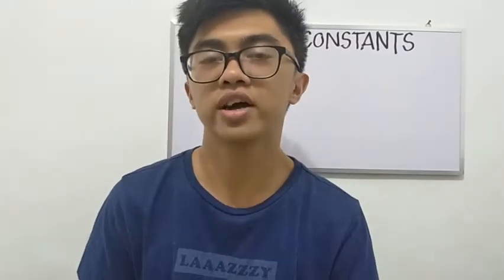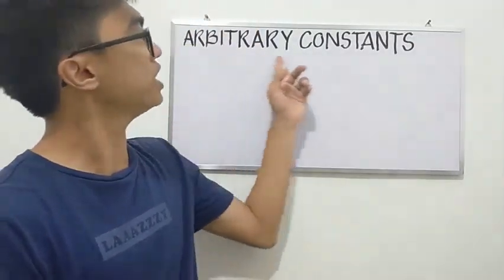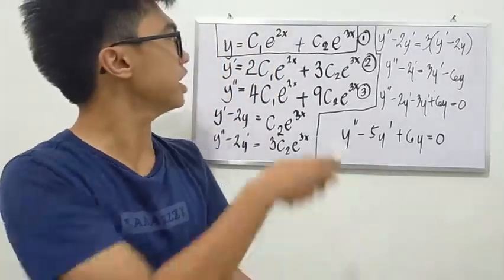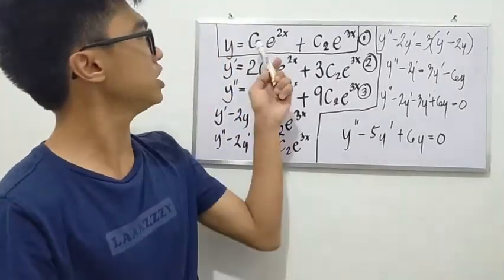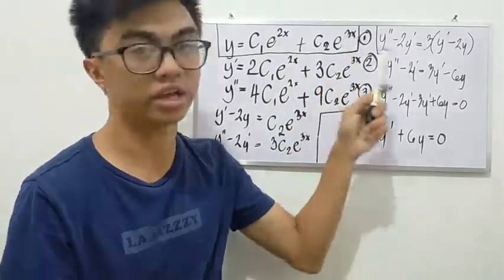There are many ways in finding differential equations. We will be talking about eliminating arbitrary constants. Let us look at this example: y equals c sub 1 e to the x plus c sub 2 e to the 3x.